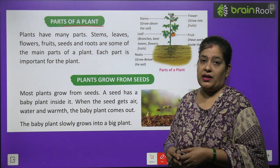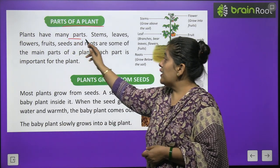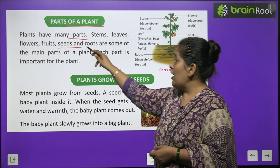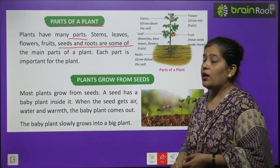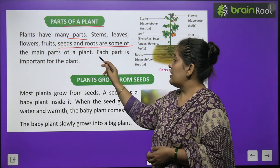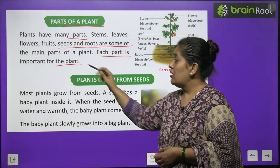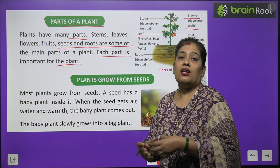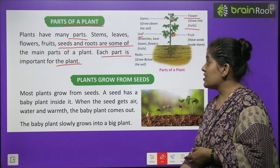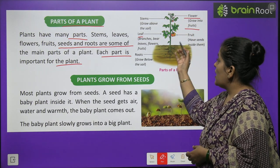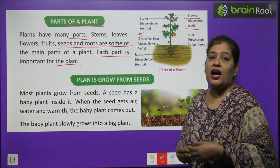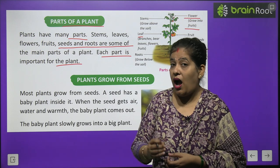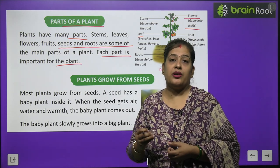Parts of a plant — now we will read about the different parts of plants. Plants have many parts: stems, leaves, flowers, seeds and roots are some of the main parts of a plant. Each part is important for a plant. A plant is made up of different parts such as flower, leaf, root and stem, and every part of the plant is very useful and important.